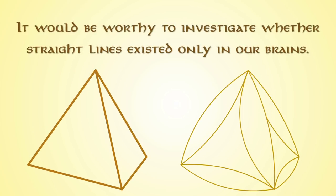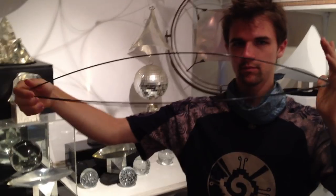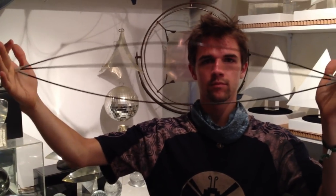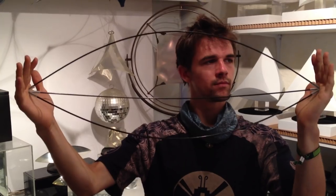The great artist Delacroix once said it would be worthy to investigate whether straight lines exist only in our brains. The interesting thing about the trion ray and the vesica pisces is that they both have straight lines as well as curves, and it's just a matter of perspective.